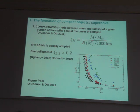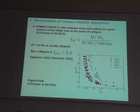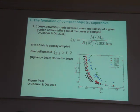This is still adopted by many people, but O'Connor and Ott in 2011 proposed a more physically motivated statement. They propose to use the Xi parameter, called the compactness, to understand whether a star will undergo a supernova leaving a neutron star, or whether it will collapse to a black hole. Xi is defined as a mass divided by the radius that encloses this mass. Basically you want to measure this compactness — m over r — in a sufficiently small portion of the star at the onset of collapse.